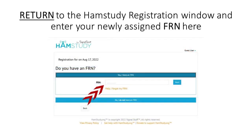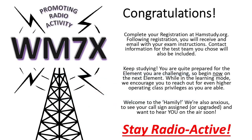Armed with your newly assigned Federal Registration Number, you are now ready to complete your HamStudy registration for your amateur radio exam. Enter your new FRN number on the screen. Once you complete your registration at hamstudy.org for your exam, prepare for an email from Exam Tools — that's the online test engine where your exam will be administered from.